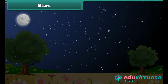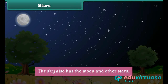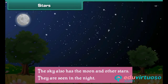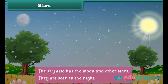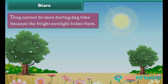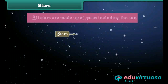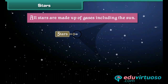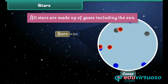The sky also has the moon and other stars. They are seen in the night. They cannot be seen during daytime because the bright sunlight hides them. All stars are made up of gases, including the sun.